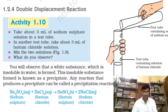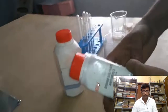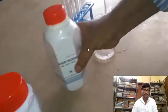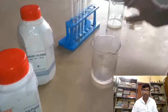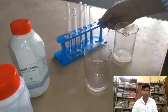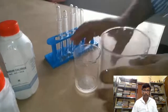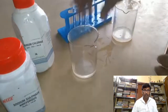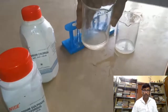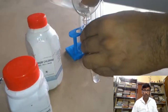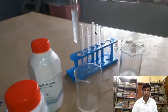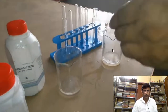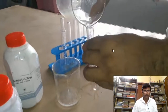Here we have sodium sulphate and barium chloride — a solution of each. We are going to pour these solutions into two different test tubes, because it will be easier to perform the experiment using test tubes. So we are pouring both solutions into two test tubes, one solution in each.